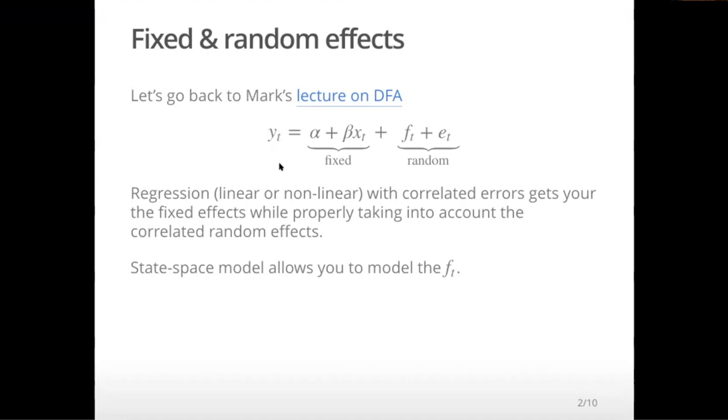You've got some response variable here. It's univariate in this case. You have some fixed effects: your intercept, your covariates, and the effect of that covariate. That's your fixed part. And then you've got your errors.